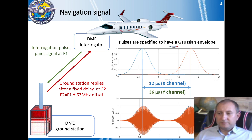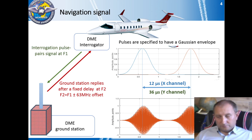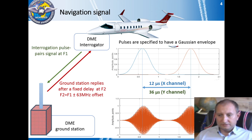The DME interrogator transmits interrogation pulse pair signals at a specific radio frequency F1. The ground station replies with a copy of this signal after a fixed delay at another frequency F2, which is either 63 MHz below or above the interrogation frequency F1. Pulses in DME are specified to have a Gaussian envelope. The spacing between pulses in an interrogation pair differs by channel: 12 microseconds for X and 36 microseconds for Y.